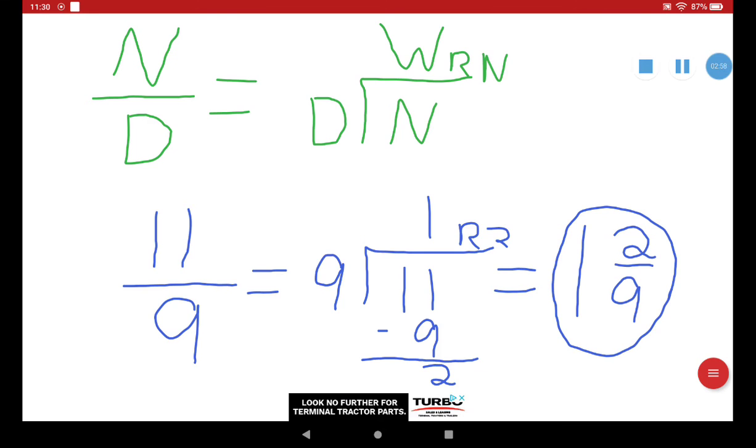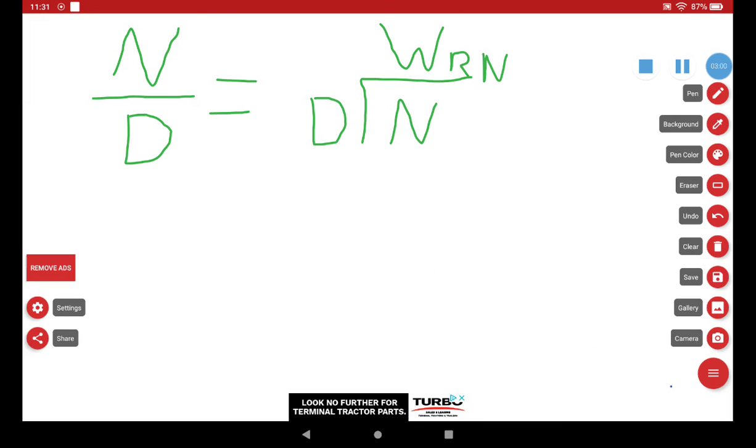Let's do that one more time. All right, so let's keep that same formula. Numerator over my denominator equals my numerator in the division box, denominator out of the box.